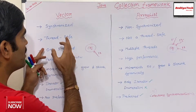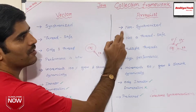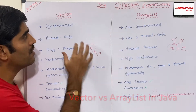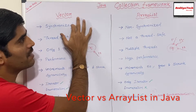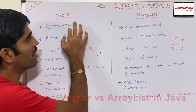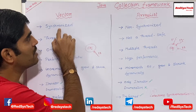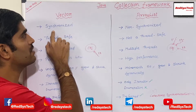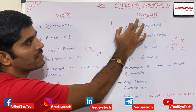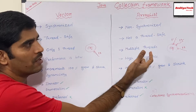Vector is a synchronized one, ArrayList is a non-synchronized one. What does it mean? Vector is a class, ArrayList is a class. Inside these classes we have methods. All the methods inside the Vector class are synchronized, and all the methods inside ArrayList are non-synchronized.